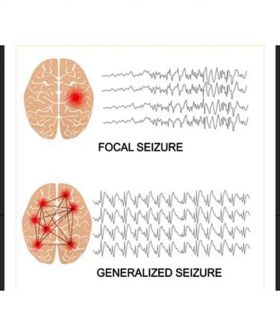Focal seizures and generalized seizures differ in that focal seizures have interruption only in one area of the brain, whereas in generalized seizures the entire brain is affected.